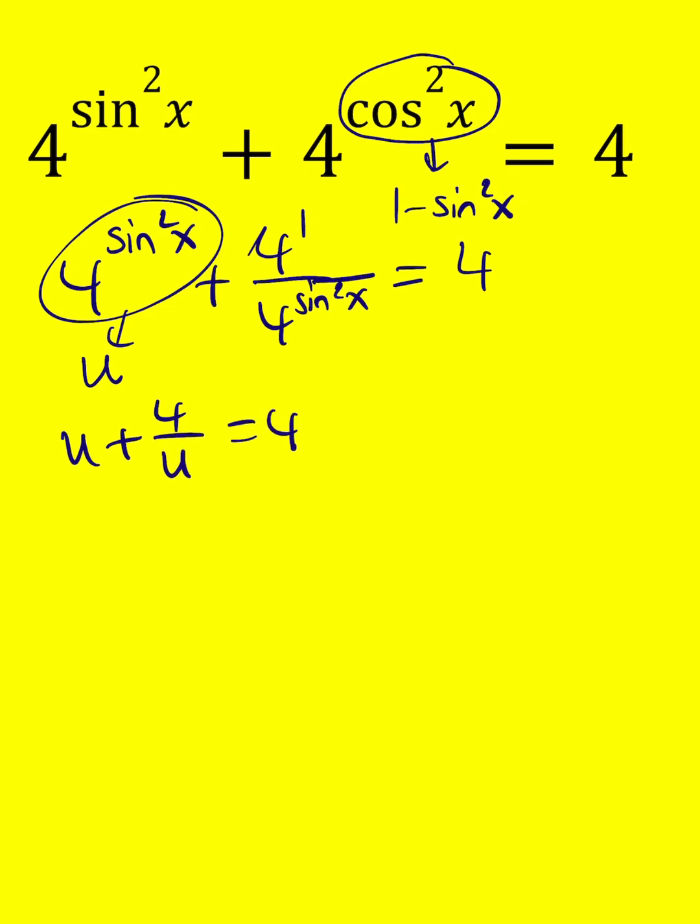Let's go ahead and solve this equation. Multiply everything by u. u squared plus 4 is equal to 4u. And when you bring the 4u to the left-hand side, you're going to realize this is actually equal to u minus 2 squared equals 0.